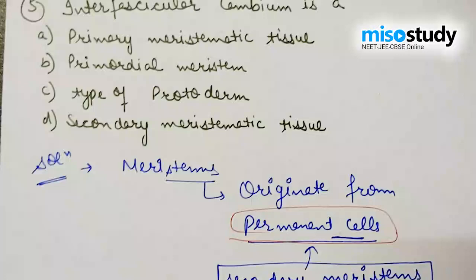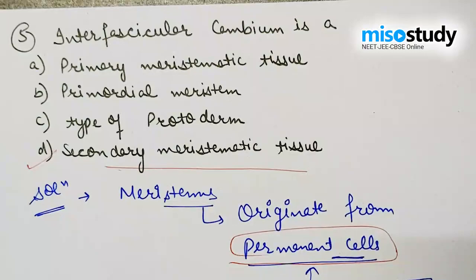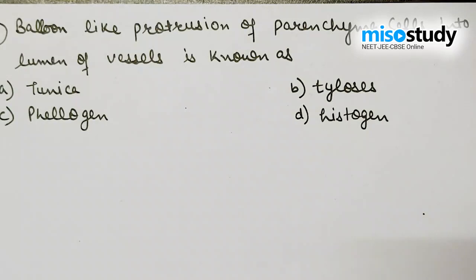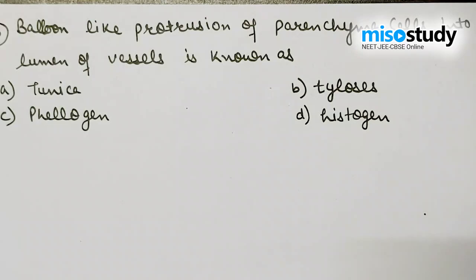Interfascicular cambium is option D — secondary meristematic tissue. Let's move on to the next question. The next question: balloon-like protrusion of parenchyma cells into the lumen of vessels is known as — option A: tunica; option B: tylosis; option C: phellogen; option D: histogen.